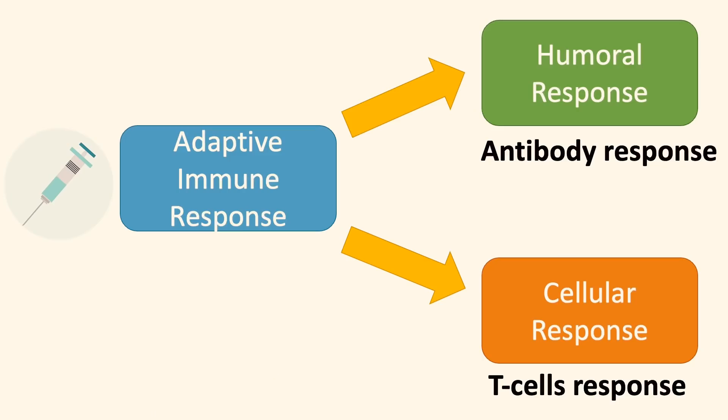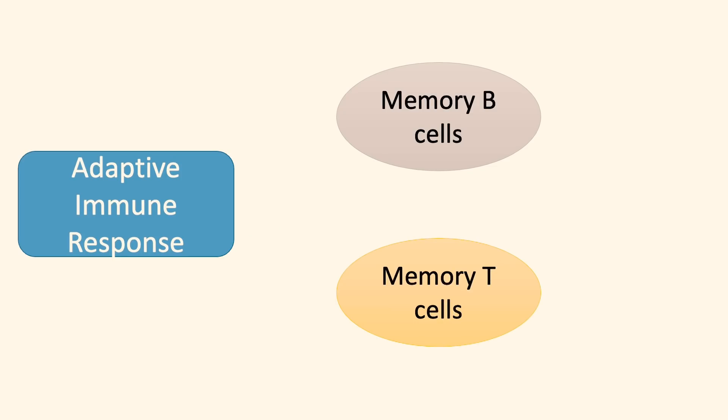Let's scientifically look at what an immune response is. Vaccines stimulate the adaptive immune response in our body. In the adaptive immune response, we have both the humoral response, also known as the antibody response, and the cellular response from T cells. Beyond that, there are also long-lasting memory B cells and T cells that command an immune response in future encounters.